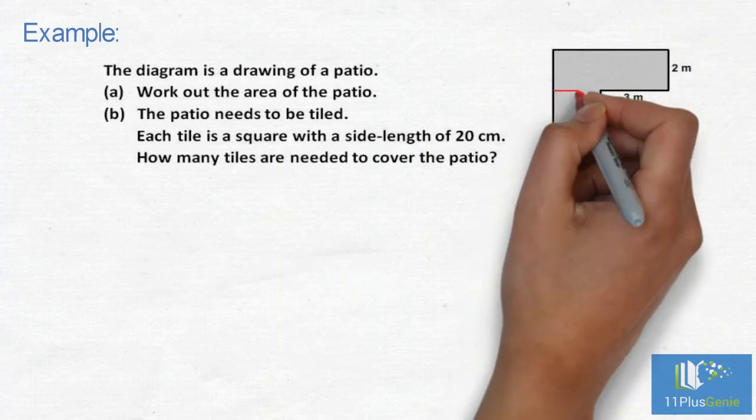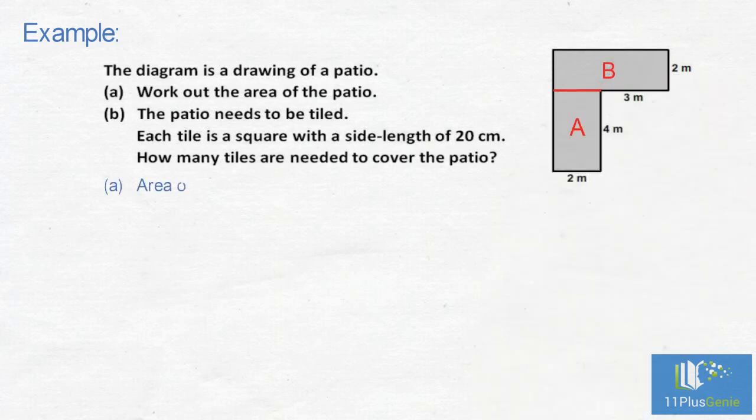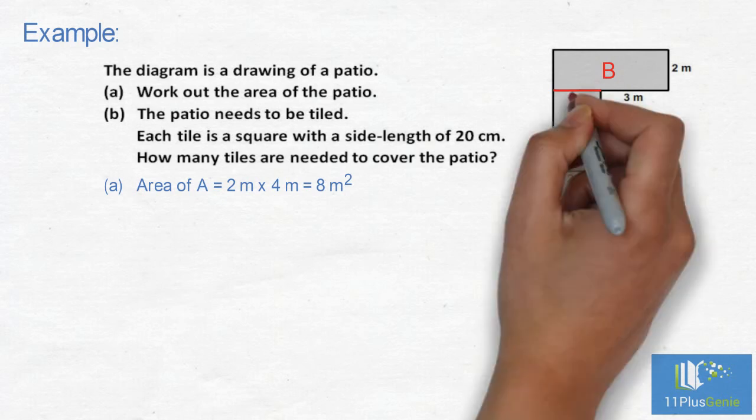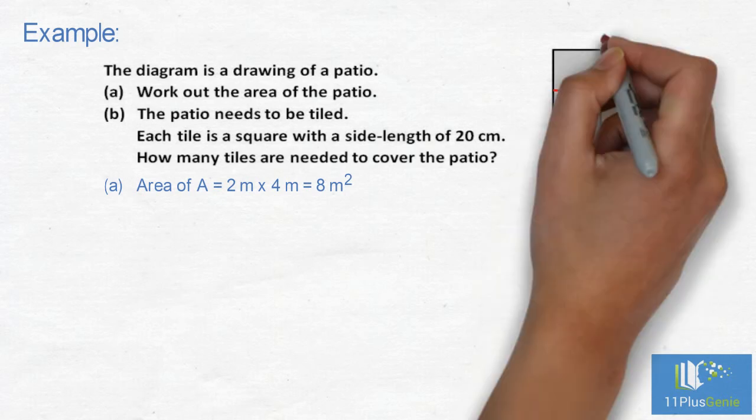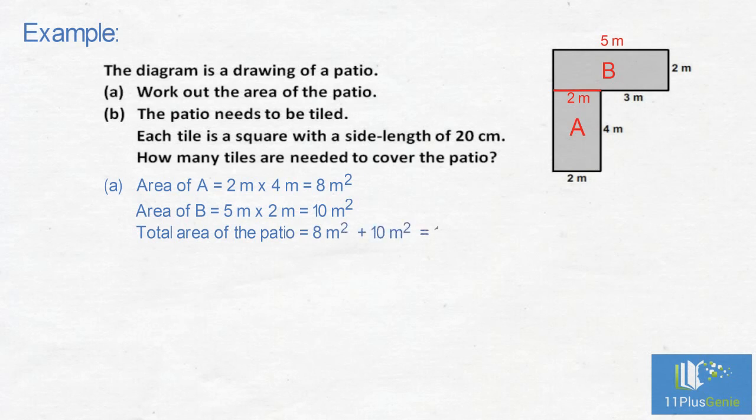Part A: We will split the shape through here. The area of rectangle A is 2m x 4m which equals 8m². For rectangle B, we need to find the length which is 3m plus 2m which equals 5m. The area of rectangle B equals 5m x 2m which equals 10m². The area of the patio is 8m² plus 10m² equals 18m².